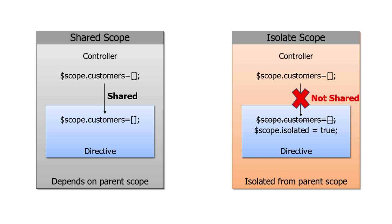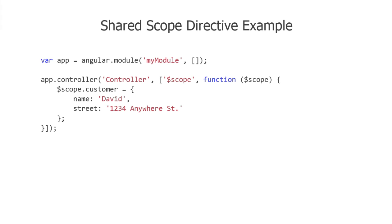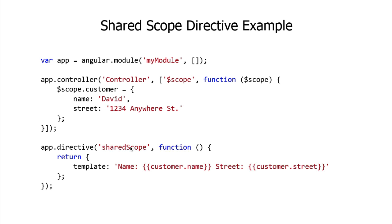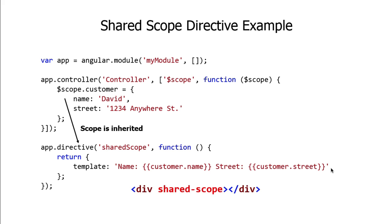Let's look at some code for shared scope. We have a controller with a customer object containing name and street properties. In our directive called shared-scope, we write a template that depends on the customer property — it'll just inherit down from the controller. We can bind to customer.name and customer.street, similar to how ng-include works, pulling in a small view. This is the shared scope concept in action.